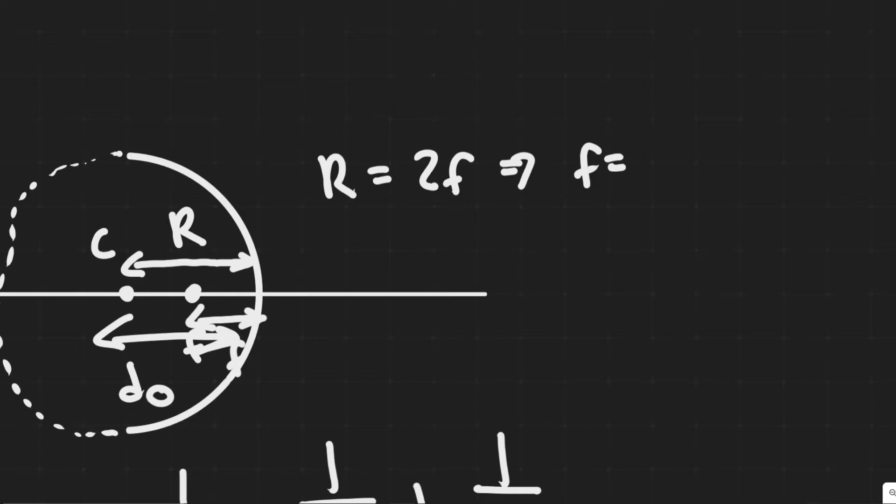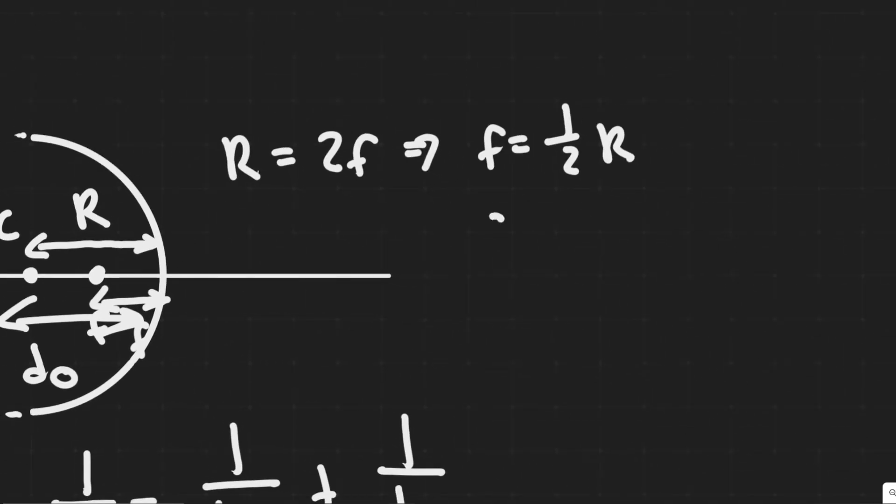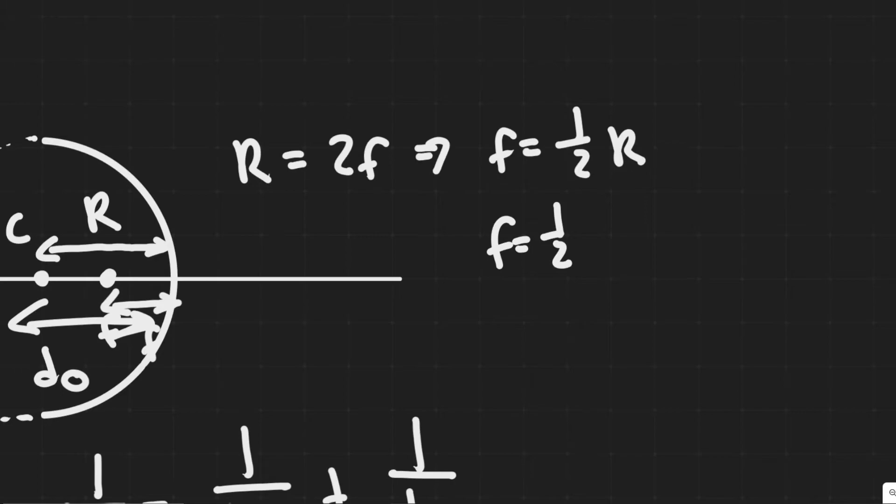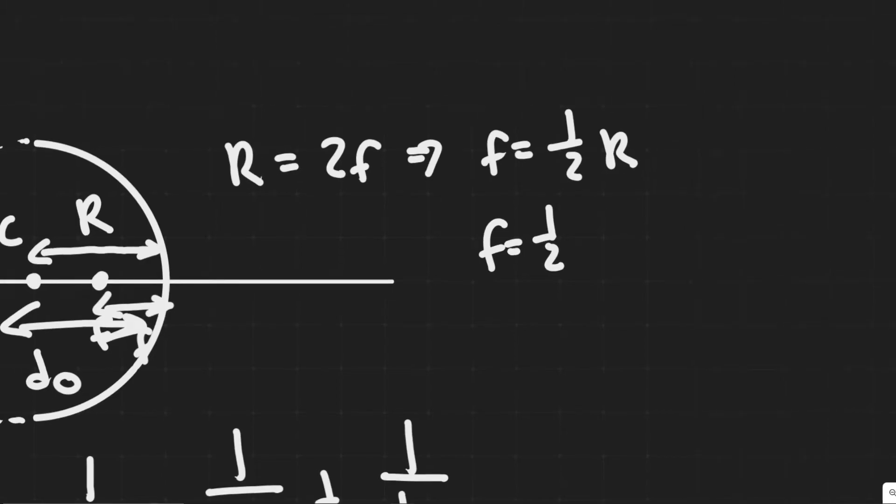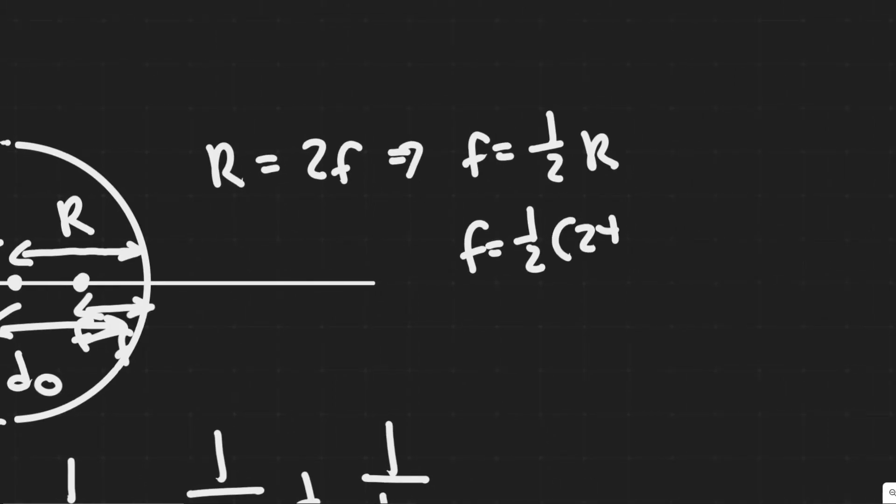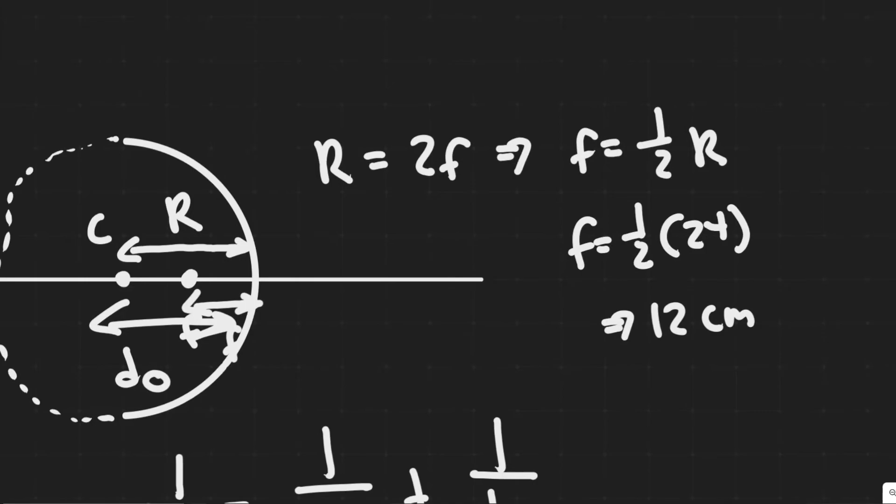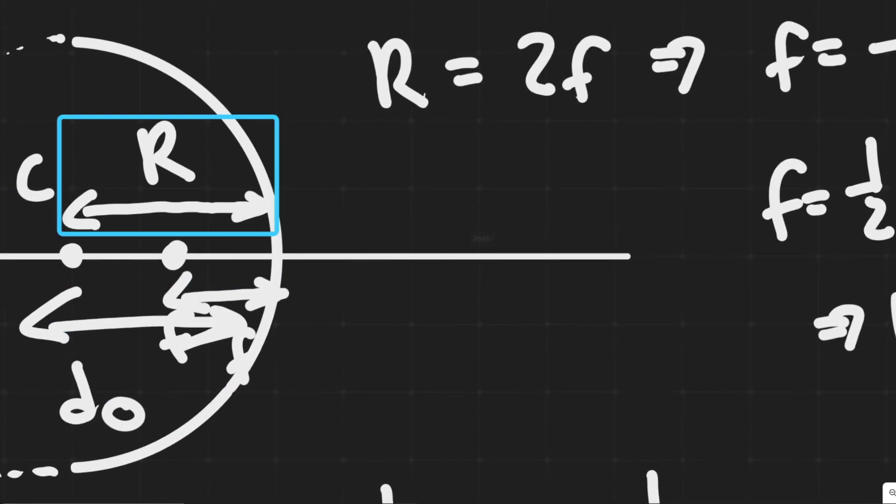So f is just half of R. If we want f, they give us the radius. F is just one half times R, which is 24 centimeters. Half of 24 is 12, so 12 centimeters is your focal length, just half the value of the radius.